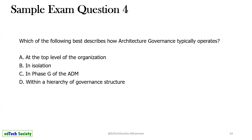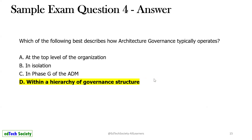Question 4: Which of the following best describes how architecture governance typically operates? Options: A — at the top level of the organization; B — in isolation; C — in Phase G of the ADM; D — within a hierarchy of governance structures. The answer is D — it always operates within a hierarchy of governance structures.